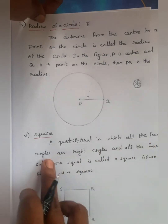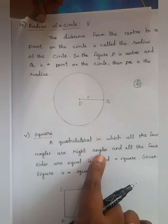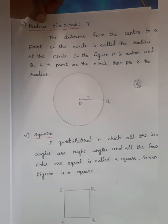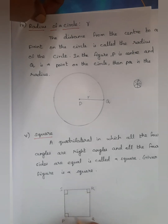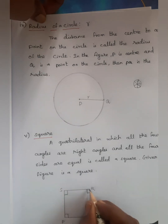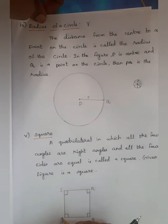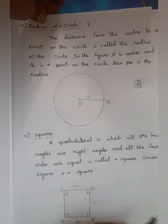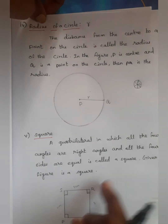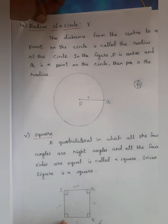A square is a quadrilateral in which all four angles are right angles — 90 degrees — and all four sides are equal. Right angle is 90 degrees. Four sides are equal. The given figure is the square, shown as P, Q, R, S, and the square.